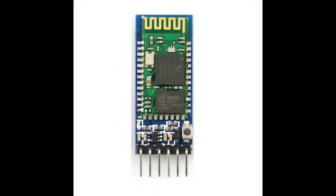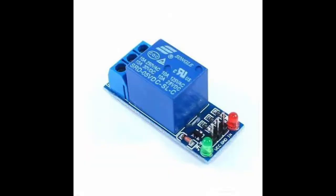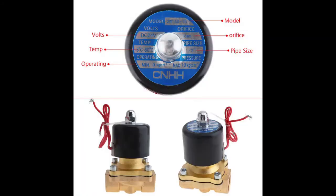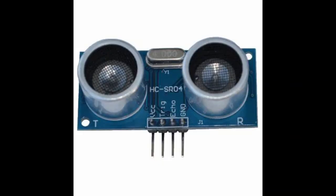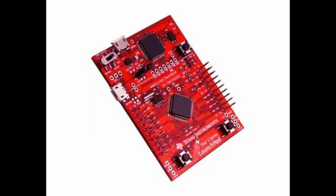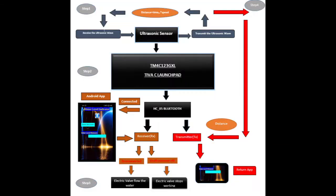In our components and block diagrams, we have the HC05 Bluetooth module to transmit signals, a 5-volt relay connected to our valve to turn it on and off, and a 220-volt valve connected directly to AC. This is the ultrasonic sensor HC-SR04 with echo and ground pins, and this is the TM4C123GH6PM Tiva microcontroller.